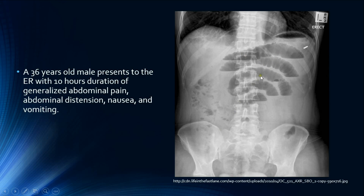Moving to the systematic review, we can see the small bowel is enlarged. We cannot see any gas in the large bowel; however, we can note some fecal material here. There are no signs of pneumoperitoneum such as free air under the diaphragm or the double wall sign, so there are no visible signs of perforation.